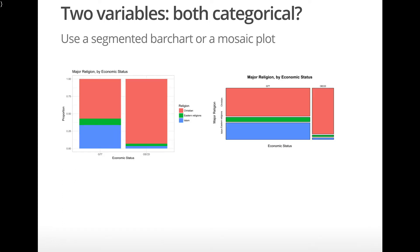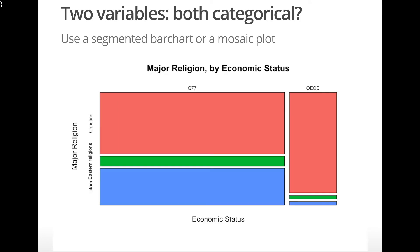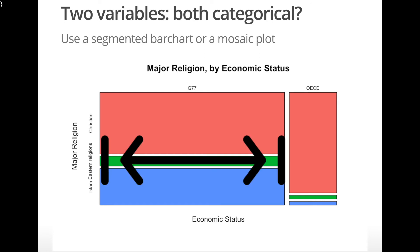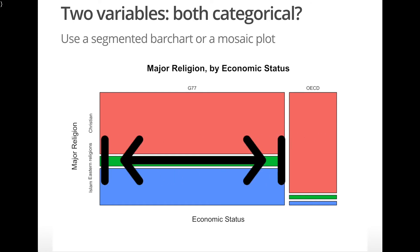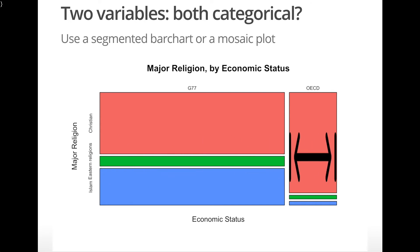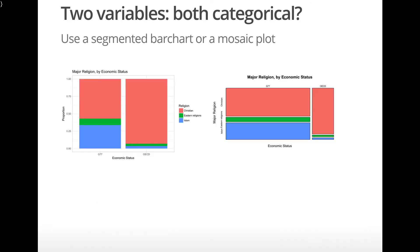Instead of a segmented bar chart, we could also use a mosaic plot. The widths of the bars are proportional to the size of that group. The G77 bar is wider than the OECD bar, meaning there are more G77 countries than OECD countries in this dataset.